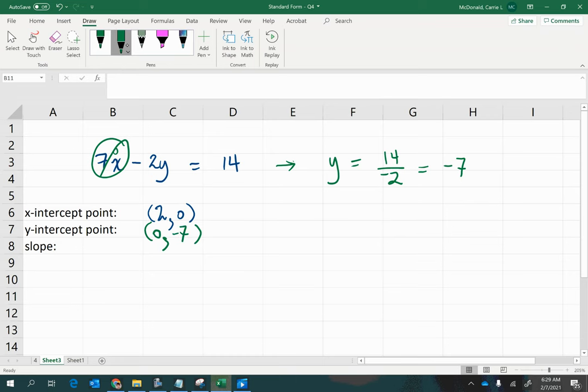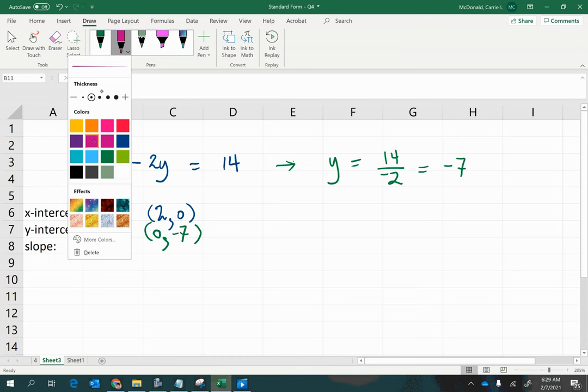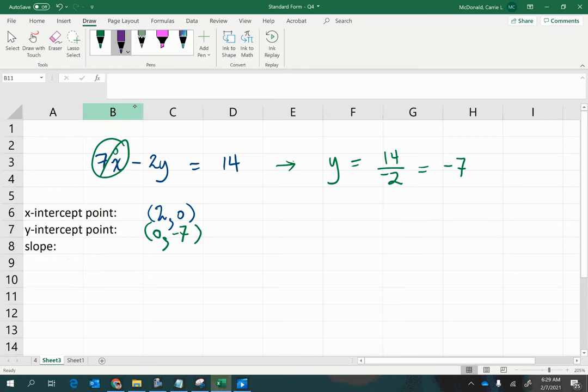And then the slope. So the slope is the fun part. We just tried this pattern. And the pattern was if you have it in standard form, then it'll be negative out front and then the coefficient of x in the top and the coefficient of y in the bottom. So let's try that.